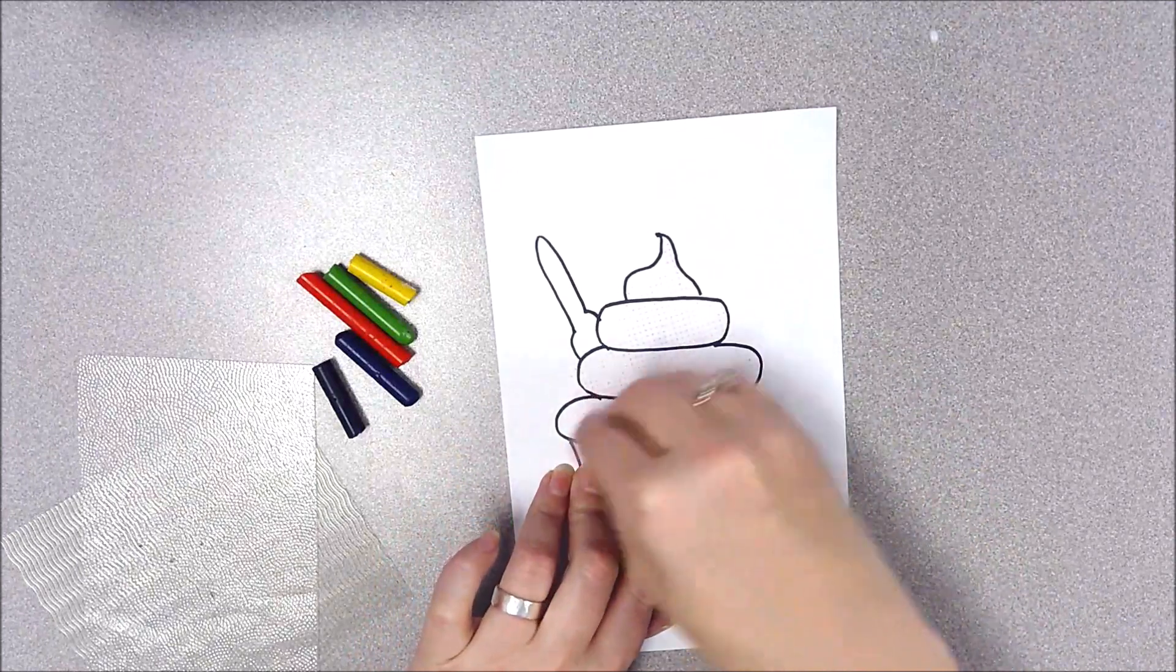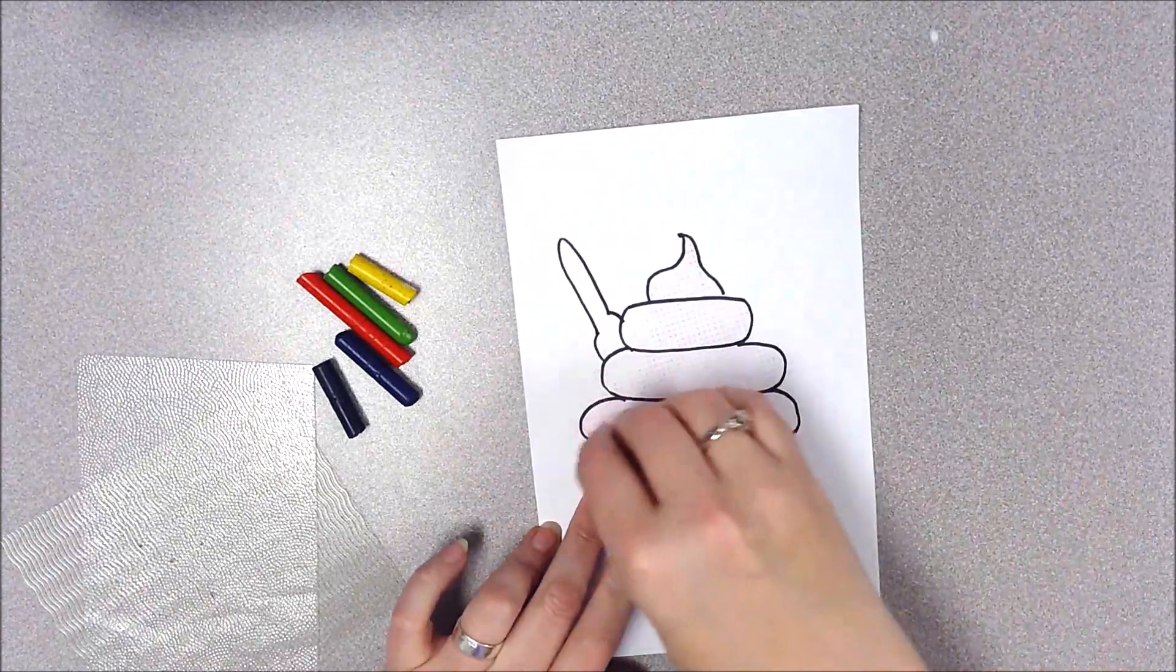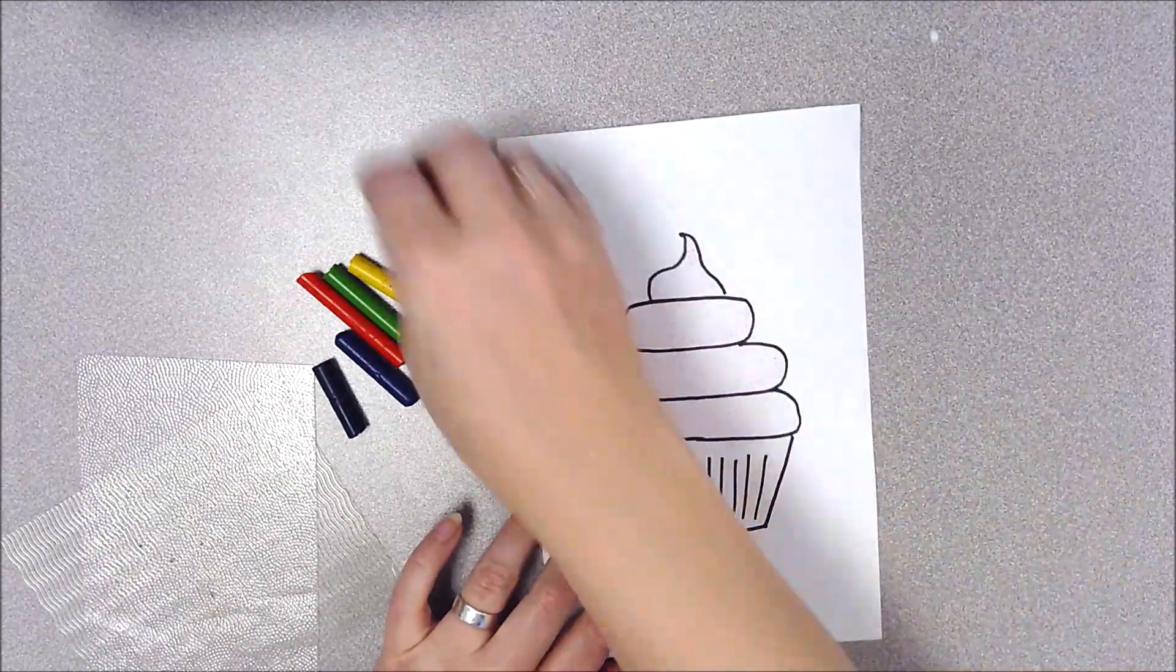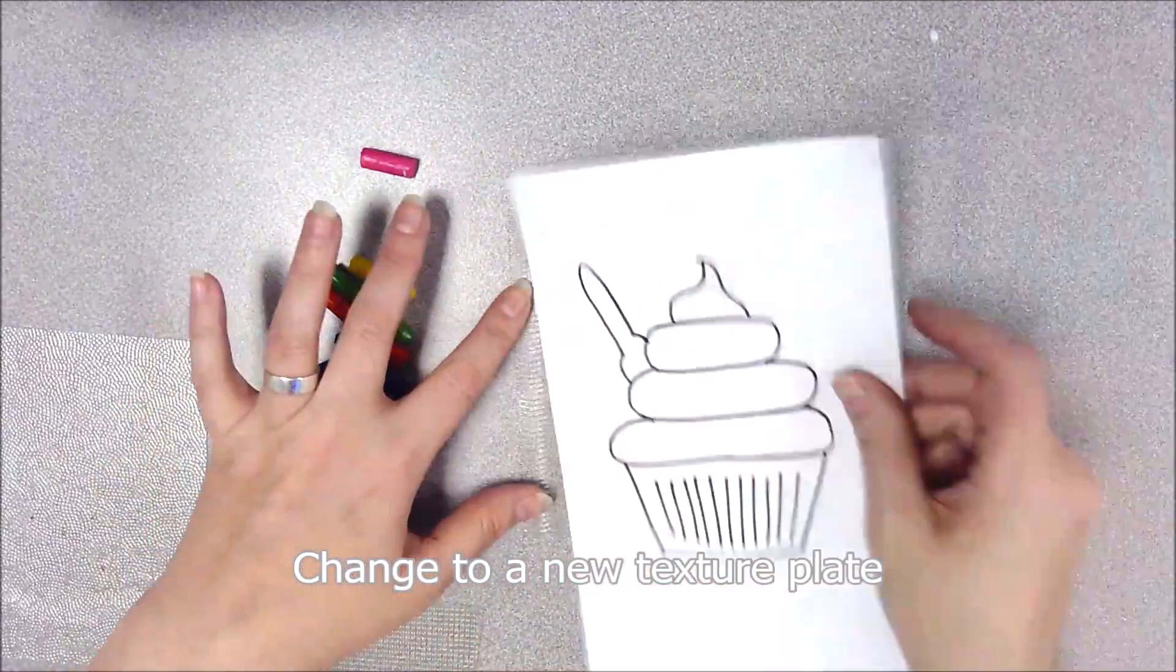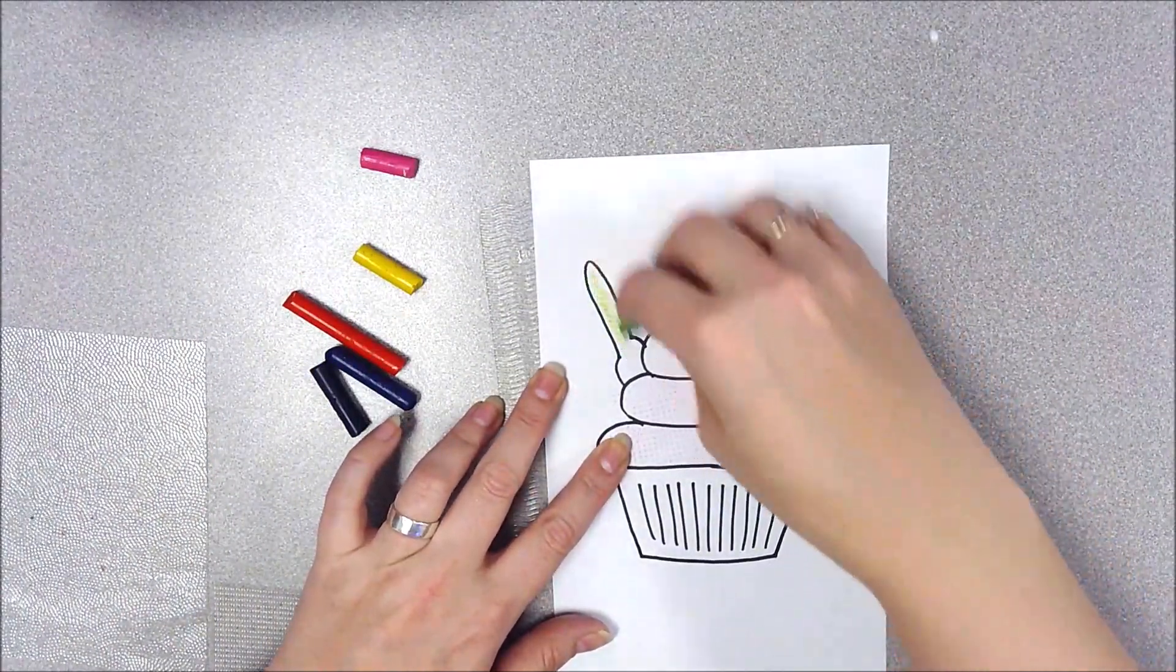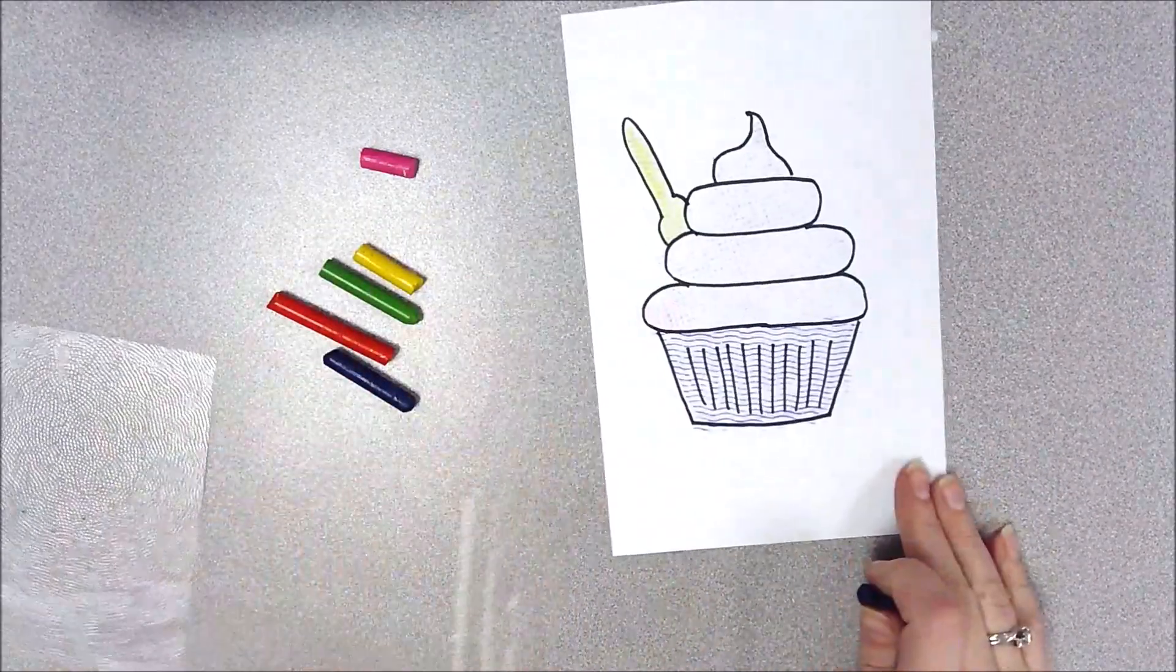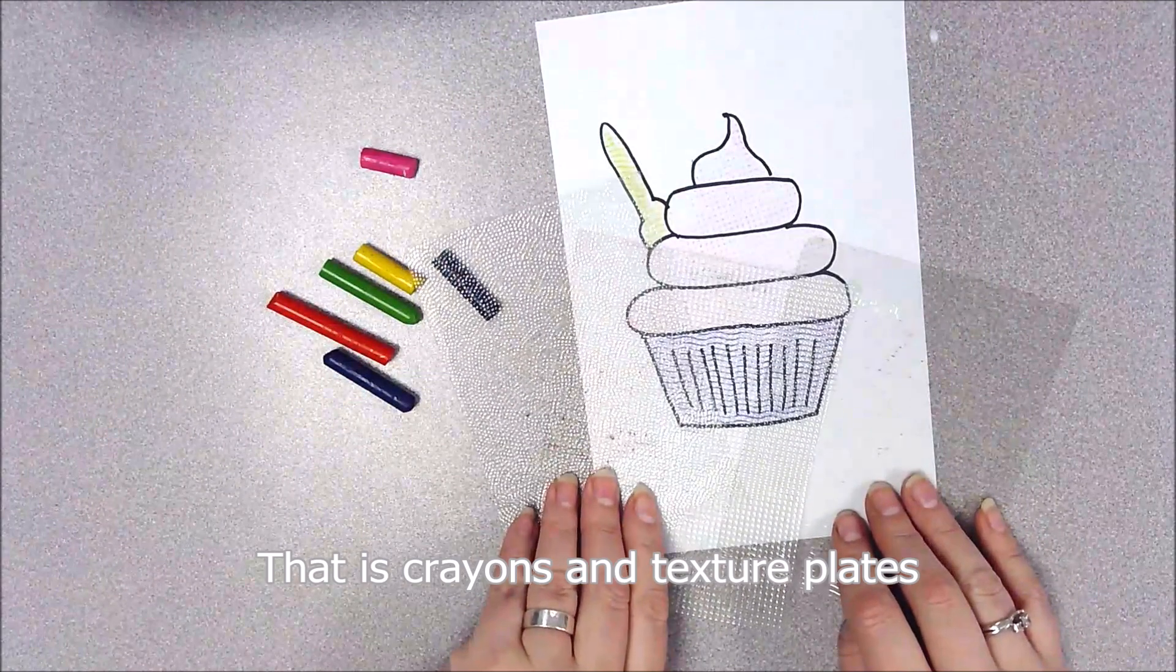You can change up your colors if you want to. You don't have to keep them all the same. And then I can change it to a different texture plate and color my spoon. So that is how we use the crayons and the texture plates.